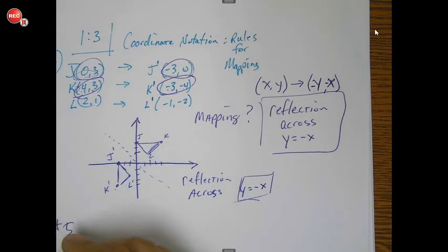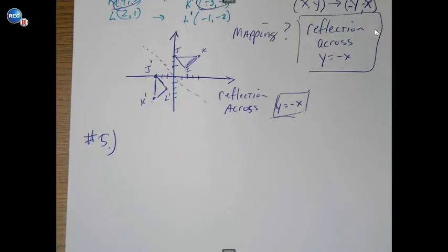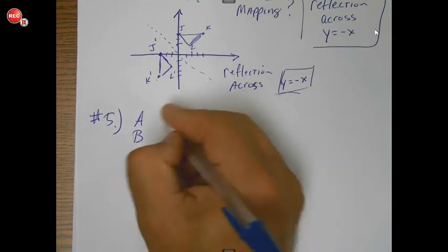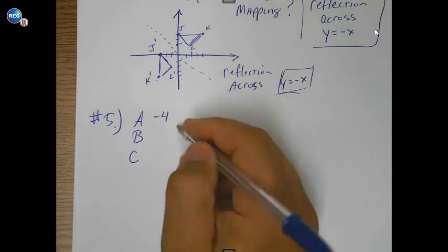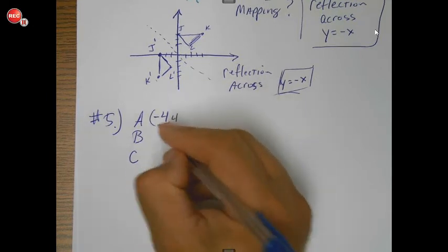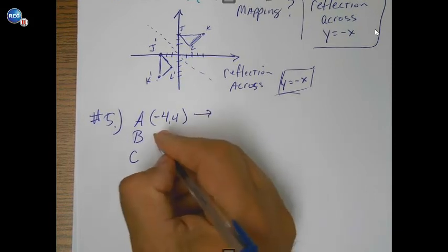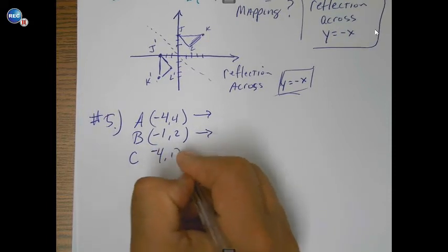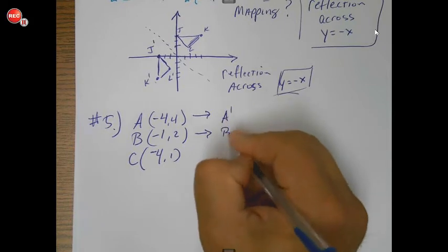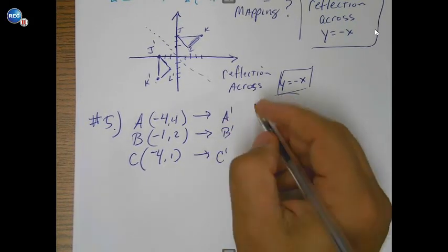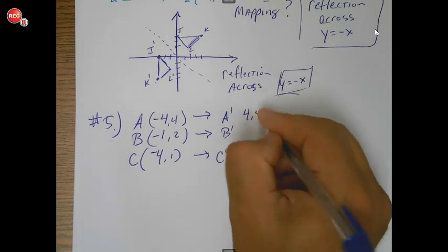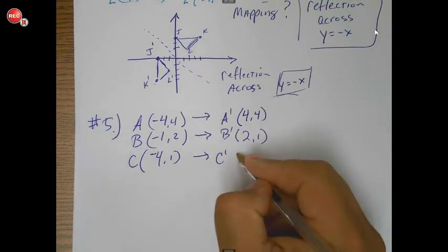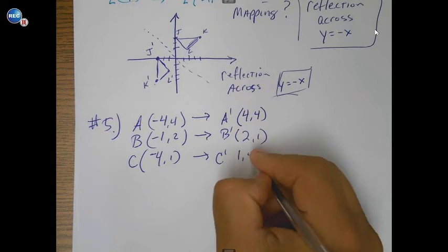Let's take a look at number five. Maybe that's not real clear. Let's take a look at number five. Same idea. We've got A, B, and C. We got negative four. I'm not done with number six, but I want to look at that a little bit more. Negative four and four. Negative one and two. And negative four and one. And that maps to four and four. Okay. Interesting. Two and one. Okay. And then one and four. All right. So what happened here?